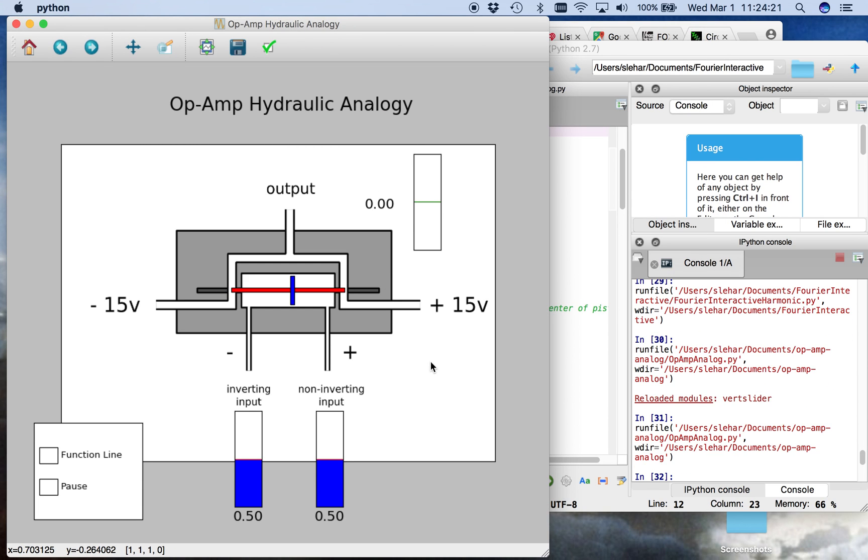Here's our op-amp hydraulic analogy. Here are the two inputs. This one's the non-inverting input, and this one is the inverting input.